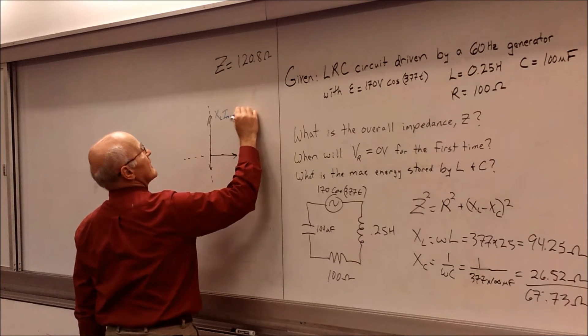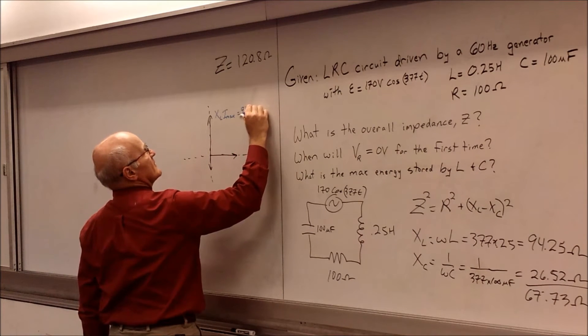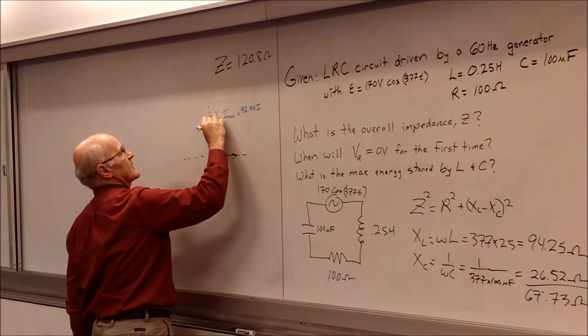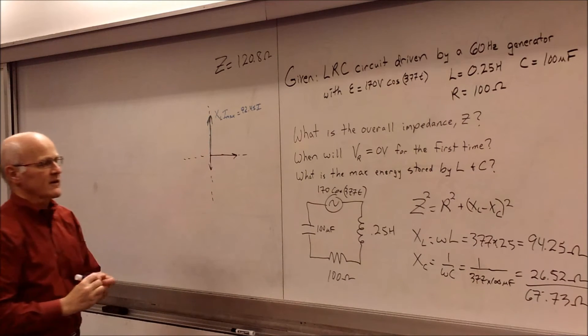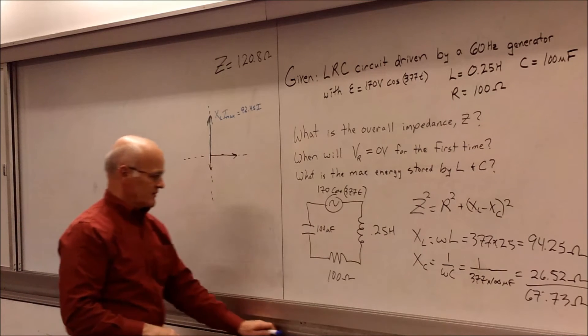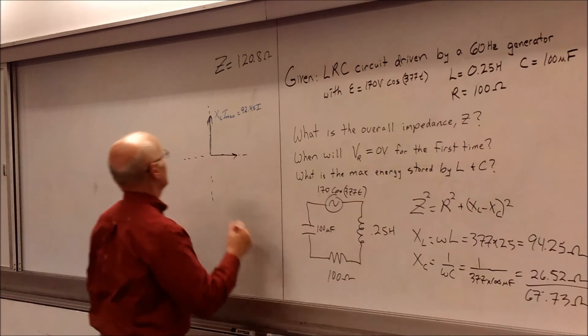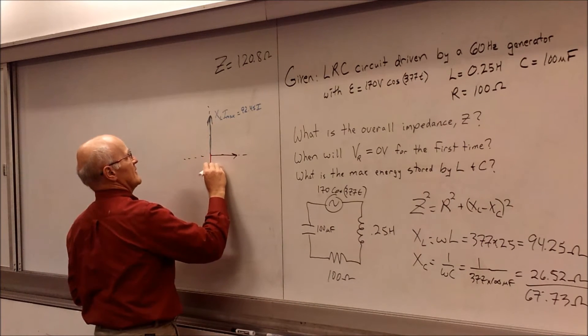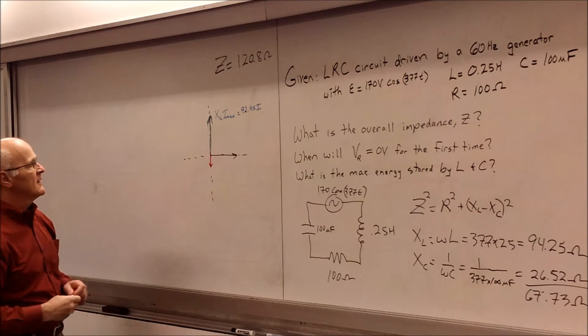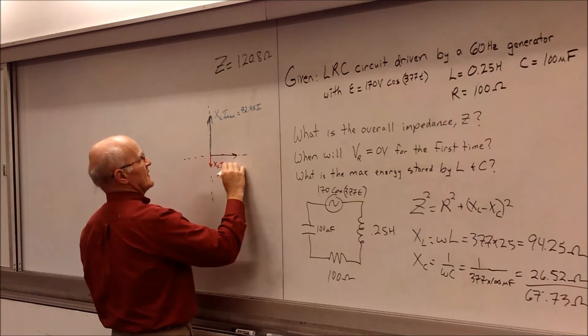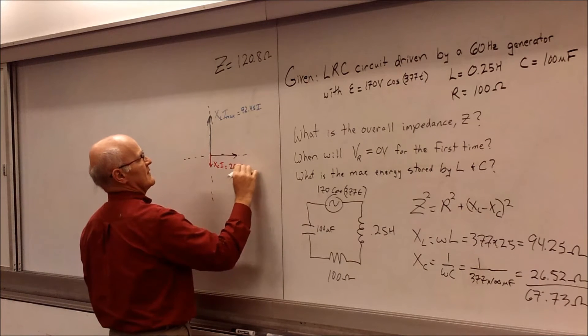And so XL, we go ahead and see that we had 94.25. So this value is 94.25 times the maximum current. And so we go ahead and make this our blue vector. And then we look and see what we're going to have for our capacitor. And the capacitor is always in the down direction. And we look and we have a value of 26. So that's going to be a fraction of what this one happens to be. So that's probably about the right rough size for our capacitor's reactance. So this is going to be XC times I. And so in this case, it will be our value of 26.52 times I.